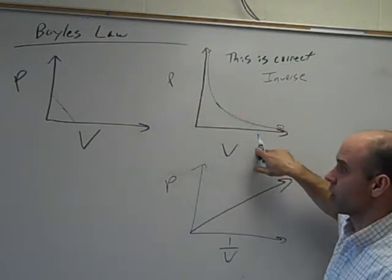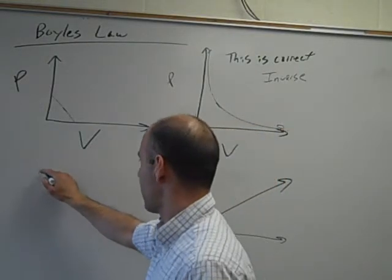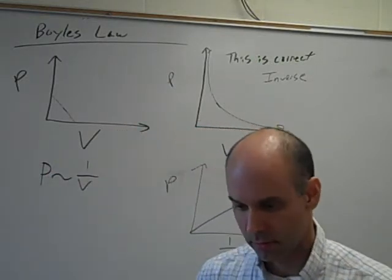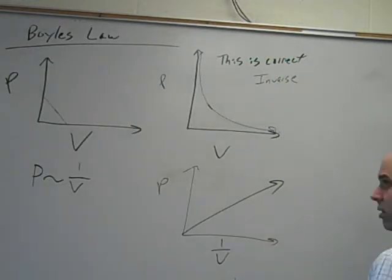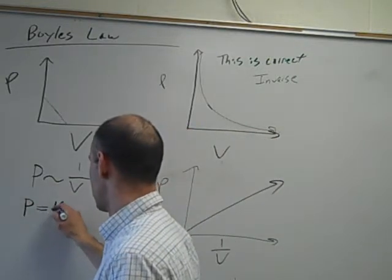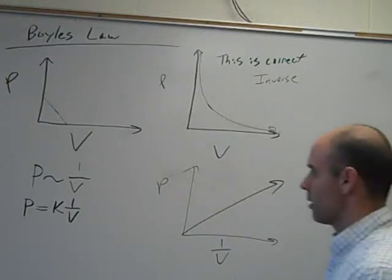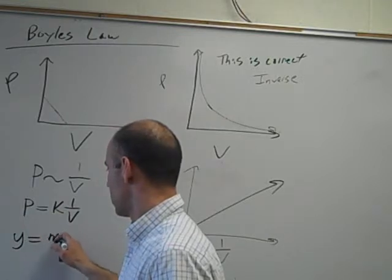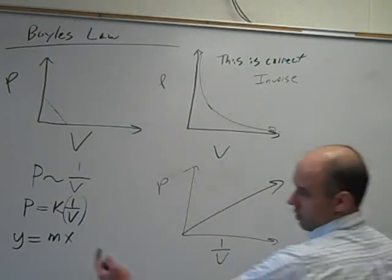That P is proportional to 1 over V. And that's why I had us go and graph the second graph. Because when you take an inverse relationship and you graph it as 1 over, it does turn it into a linear relationship.